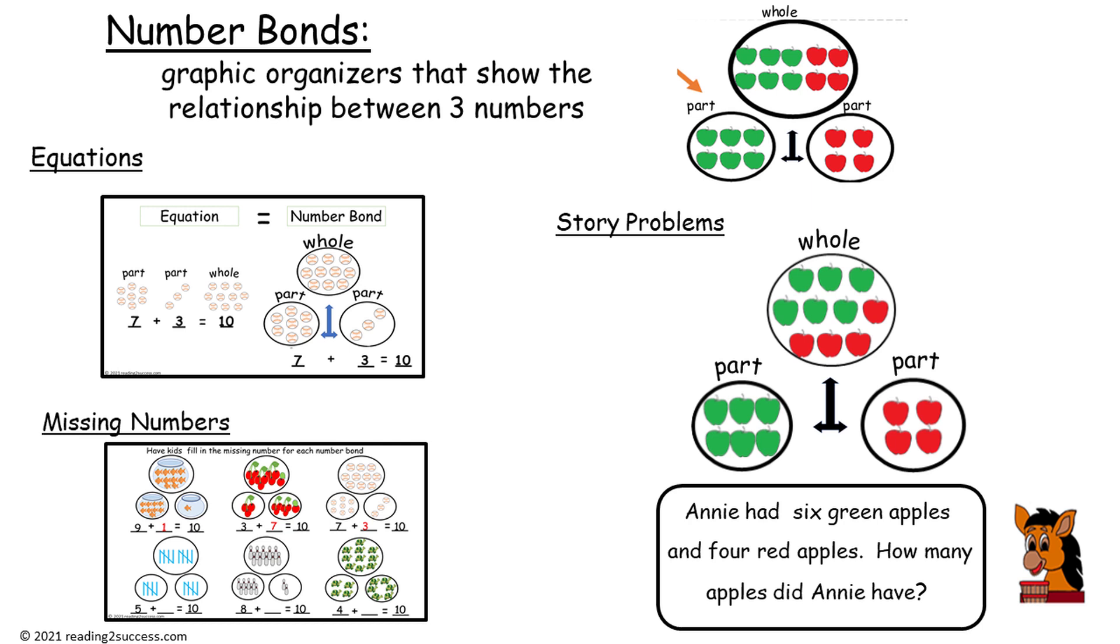Annie had six green apples and four red apples. How many apples did Annie have? So the number bonds show part to part to whole.